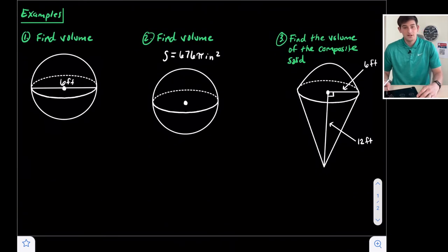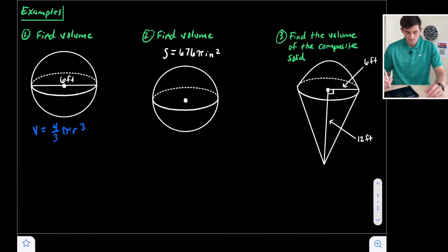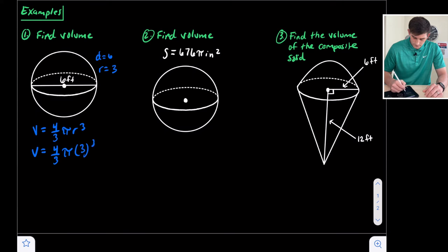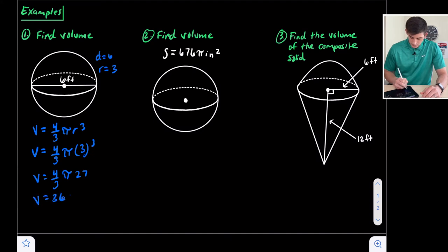For number one, we're just going to find the volume. We start off with volume equals four thirds pi r cubed, but we are given the diameter. So we know that if the diameter is six, then the radius is three. So we have volume equals four thirds pi times three cubed. Three cubed is 27, so now we have four thirds times pi times 27. We do 27 times four, then divide that by three, and we get a volume of 36 pi cubic feet.